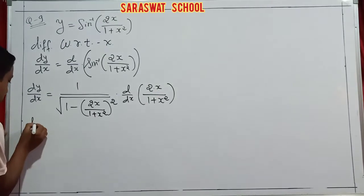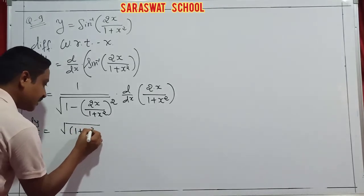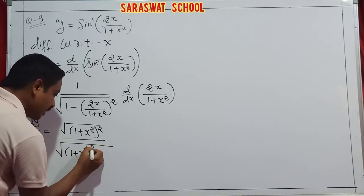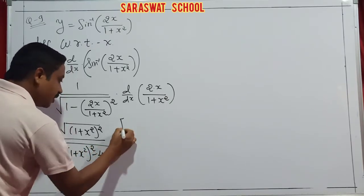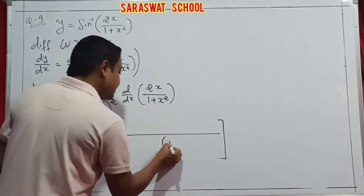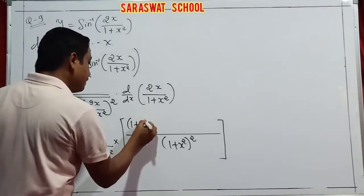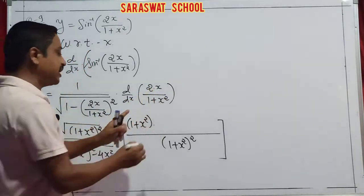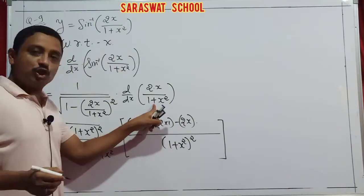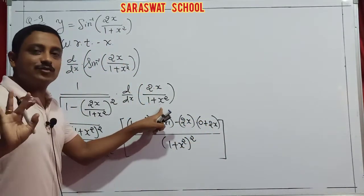So dy/dx: the LCM carries the (1+x²)² to the upper side. Inside we have (1+x²)² - 4x². Now applying the u/v rule in the denominator squared. The numerator of 2x has derivative 2, and the denominator 1+x² has derivative 2x. So the numerator for the quotient rule is: 2·(1+x²) - 2x·(2x).